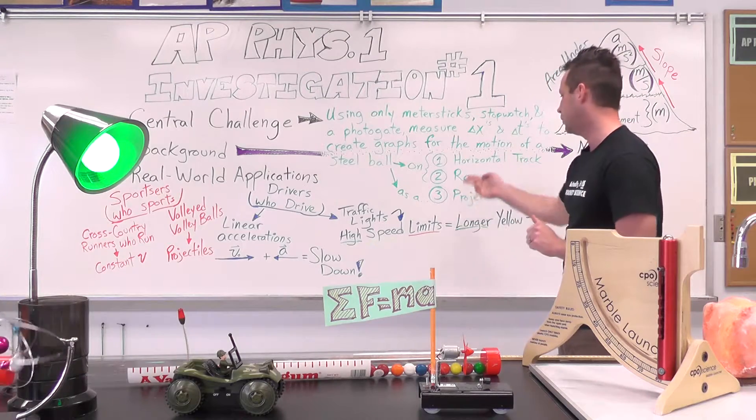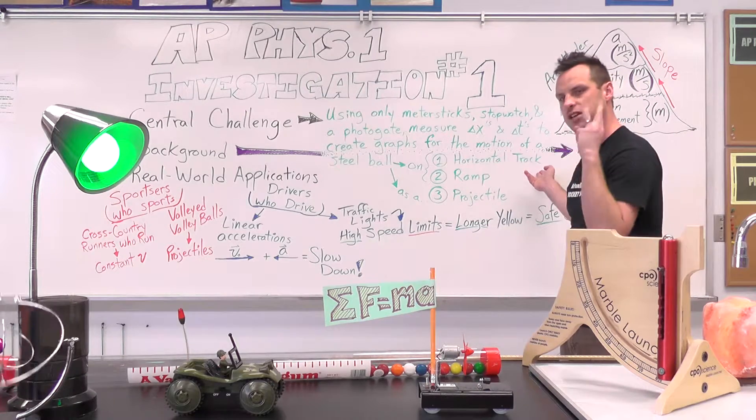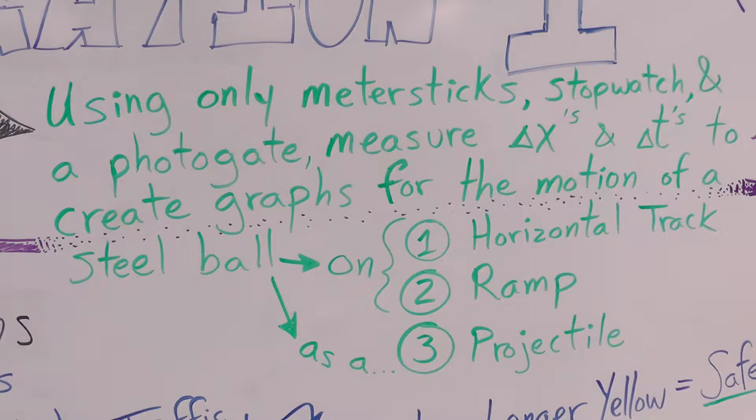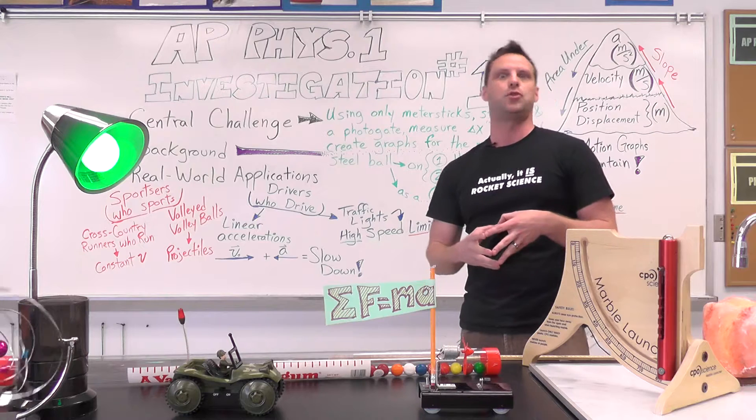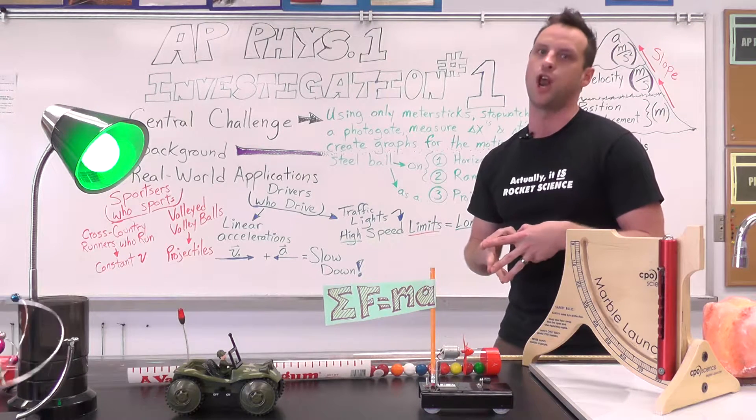That ball will move in three stages. Stage number one, it will move across a horizontal track. Stage number two, it will move down an inclined ramp. And stage number three, it will become a horizontally fired projectile flying through the air towards the ground below.